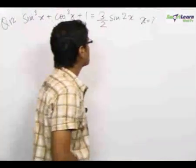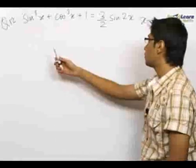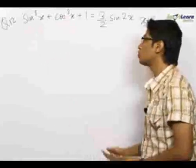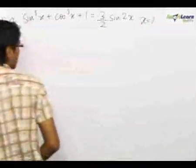So, in our twelfth problem, this is a special kind of problem which is having a special trick to solve the given problem. We have sin³x + cos³x + 1 = (3/2)sin2x, and we want to find the value of x satisfying the given equation.